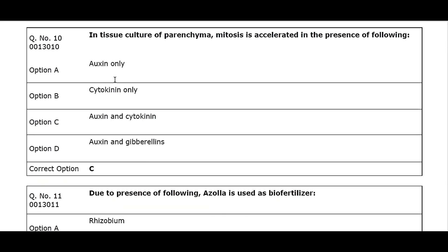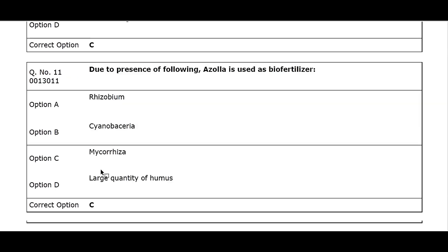Q10. In tissue culture of parenchyma, mitosis is accelerated in the presence of: Option A. Auxin only. Option B. Cytokinin only. Option C. Auxin and cytokinin. Option D. Auxin and gibberellins. Correct option C.